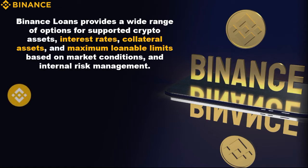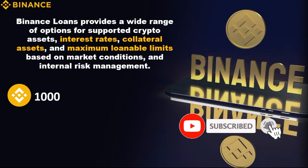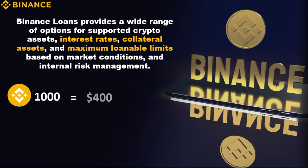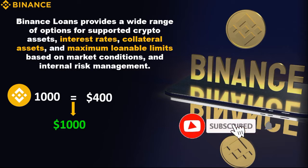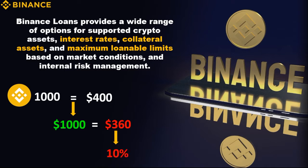Let's assume you have some BNB token — about 1,000 BNB tokens — and you bought this BNB token at around $400. This 1,000 BNB is part of your long-term crypto plans. You want to sell these 1,000 tokens when the price gets to $1,000 each. All of a sudden, the price drops from $400 to $360 — that's about a 10% drop from what you bought it at.